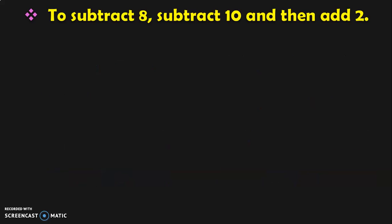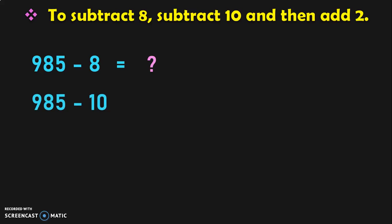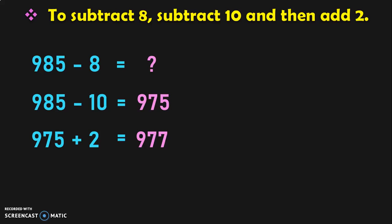To subtract 8 from a number, subtract it by 10 and then add 2. For example, 985 minus 8 is equal to what? First, 985 minus 10 gives you 975. Now, 975 plus 2 is equal to 977. So, the answer for 985 minus 8 is equal to 977.